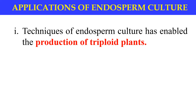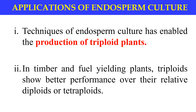The seedless trait increases the edibility of fruits and is desirable in plants such as apple, banana, grape, watermelon, and mango. Another application is that in timber and fruit-yielding plants, triploid plants show better performance over diploid and tetraploid plants. These are the certain applications of endosperm culture.